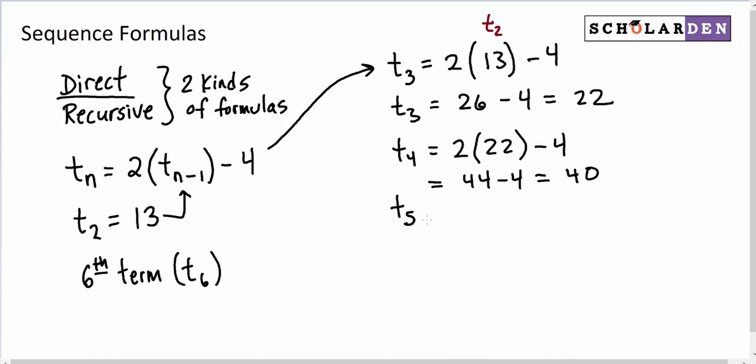Now we put that in the formula to get the next term, T₅. T₅ is 2 times the term before it, or T₄, minus 4. 2 times 40 is 80, minus 4 is 76.